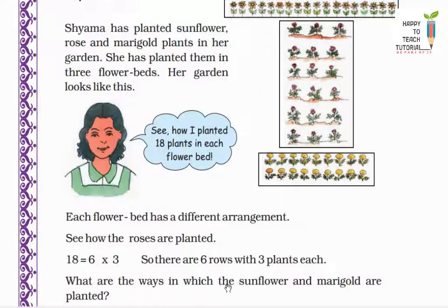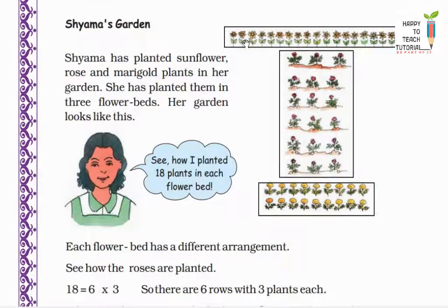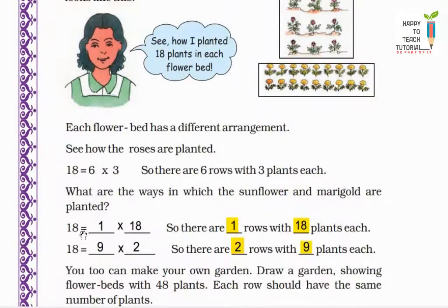Next is what are the ways in which the sunflower and marigold are planted? For sunflower, there are only 1 row with 18 plants. That means 1 into 18 is equal to 18 sunflowers are there. Next, marigold - there are 2 rows with 9 plants each. That means 9 into 2 is equal to 18 plants are there. So we can write 18 is equal to 1 into 18 for sunflower and 9 into 2 is equal to 18 for marigold.